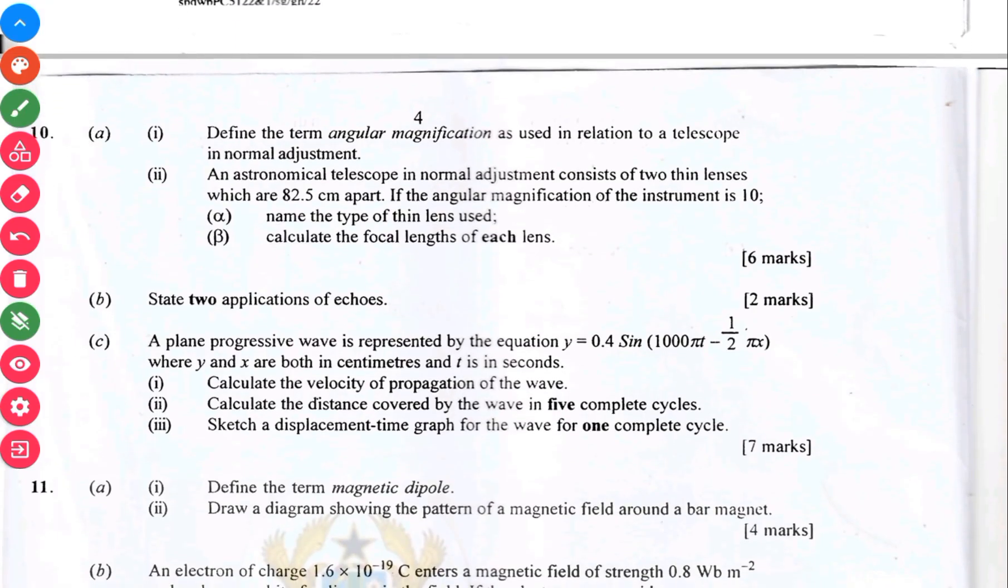Question 10 has to do with light, angular magnification. So you are supposed to find the focal length here and the name of the type of thin lens used. Then B here has to do with sound. And over here again, another question on simple harmonic motion in question 10C.